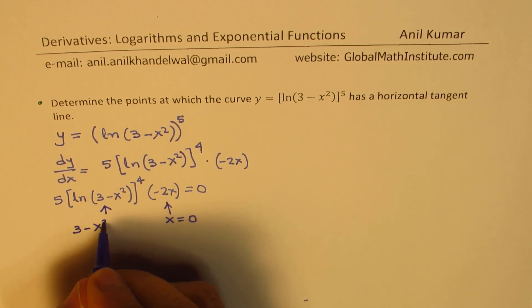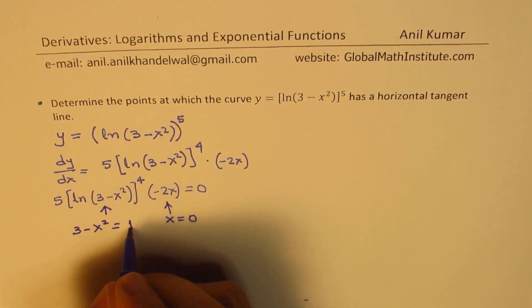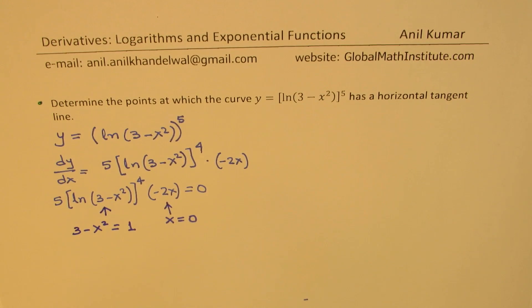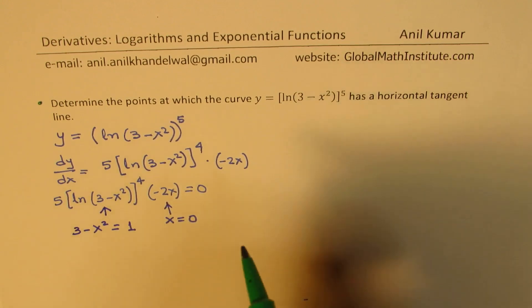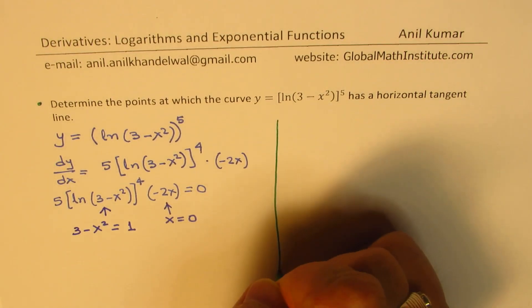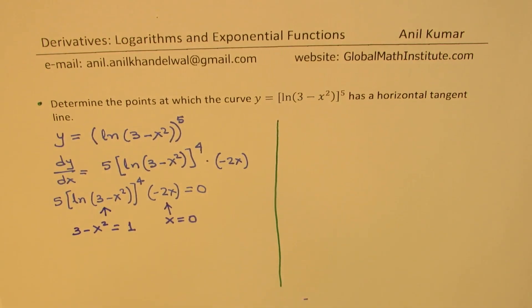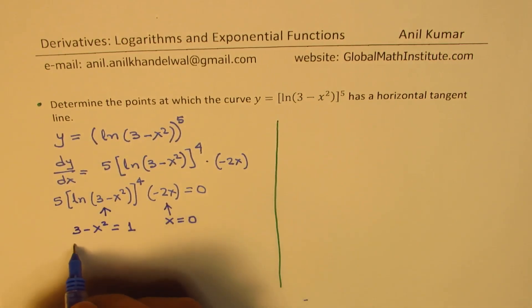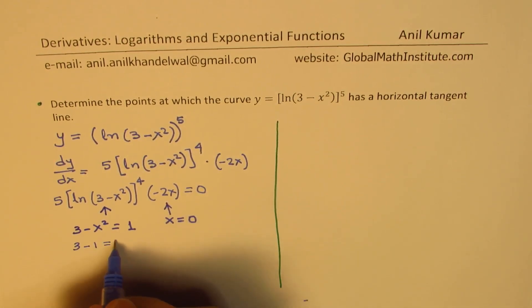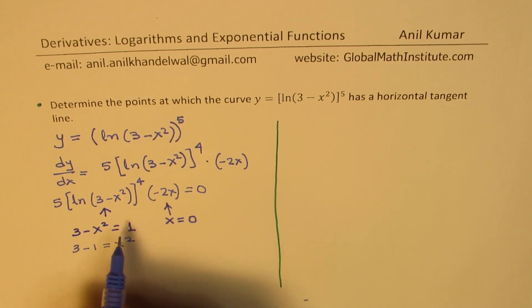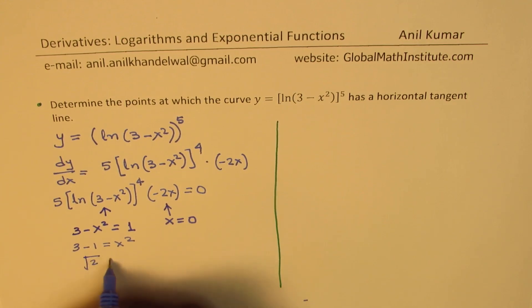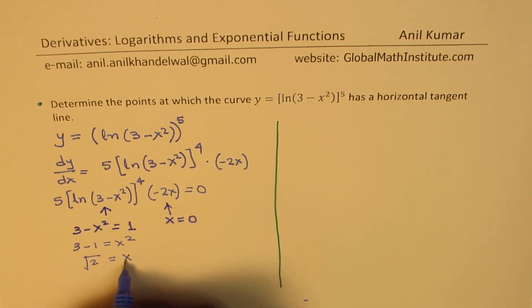That means 3 minus x squared should equal 1. So that will be the second possible solution. This gives us that 3 minus 1 equals x squared, or square root of 2 equals x.